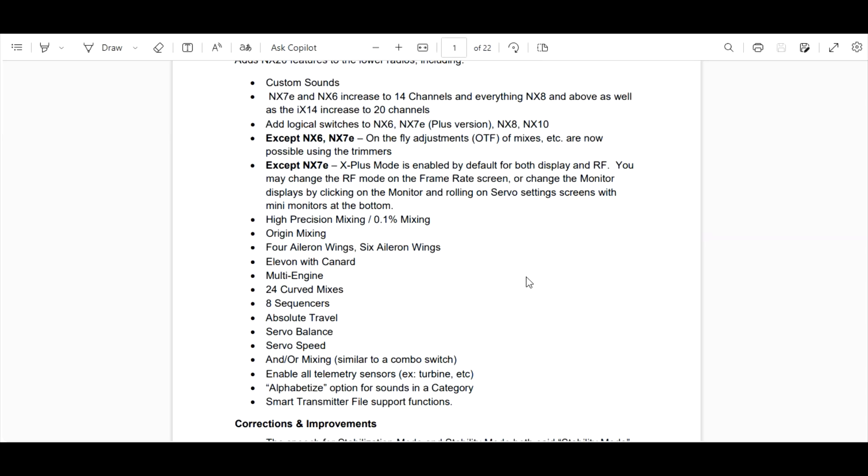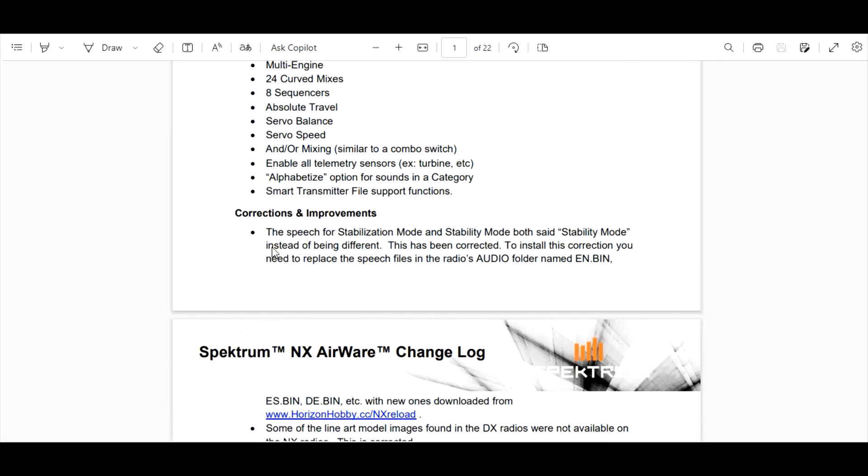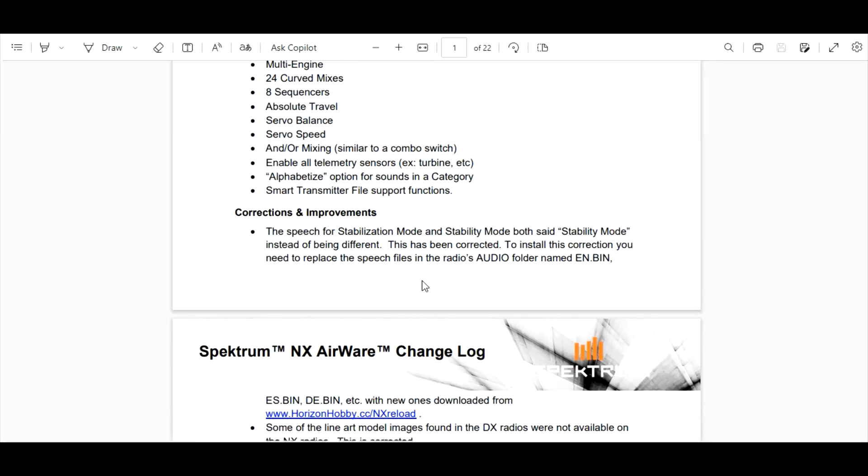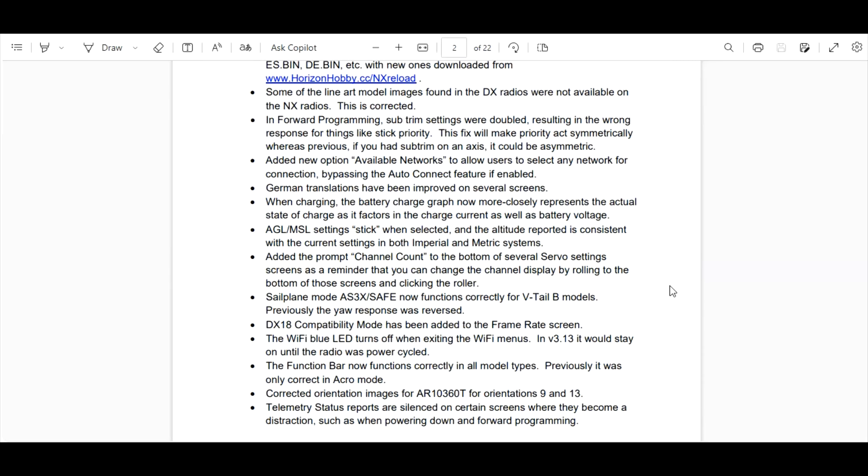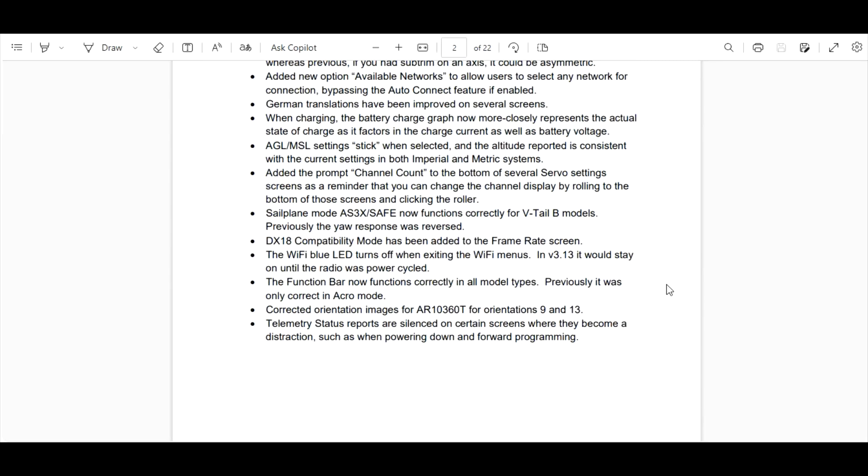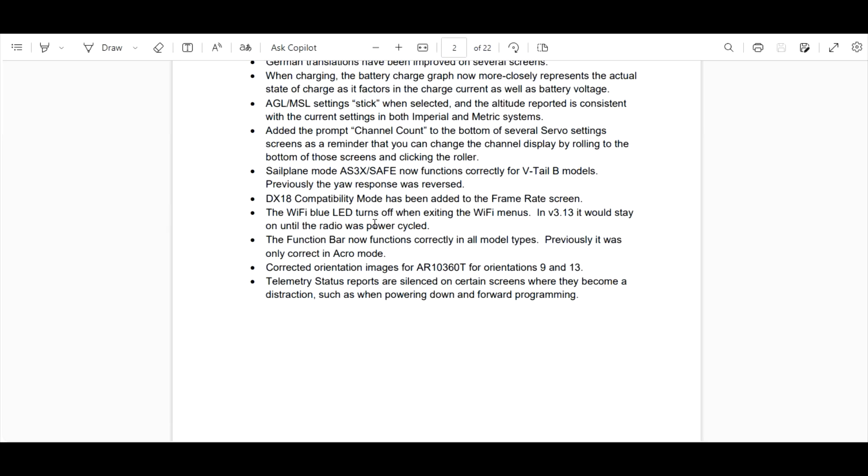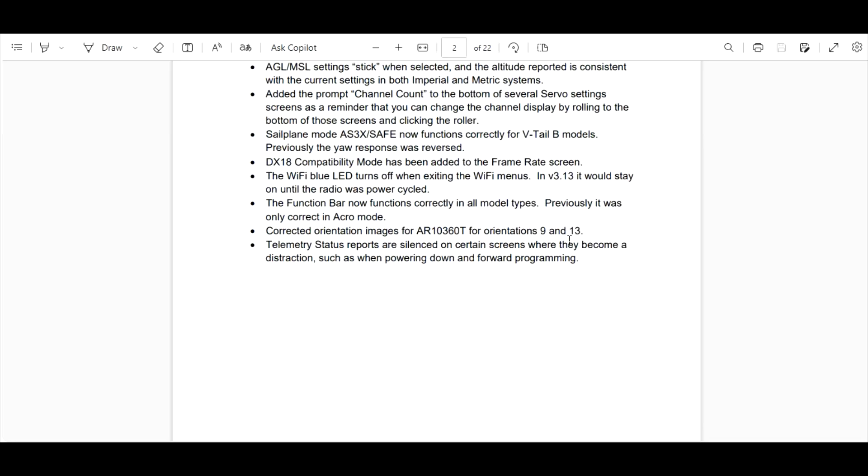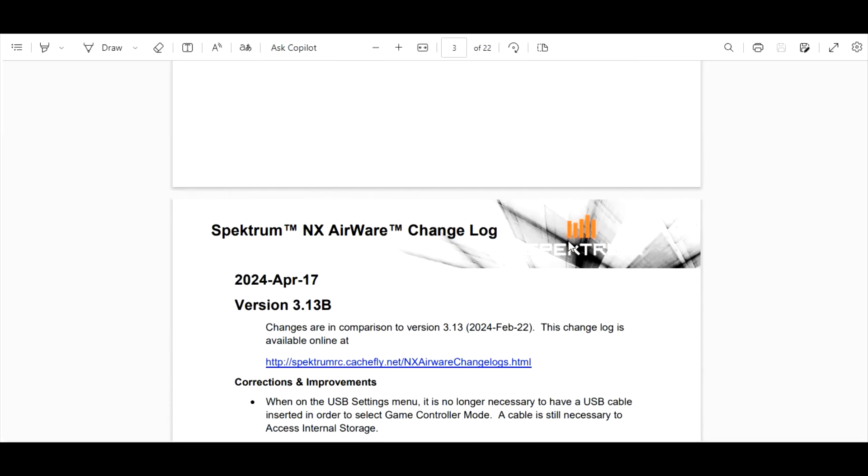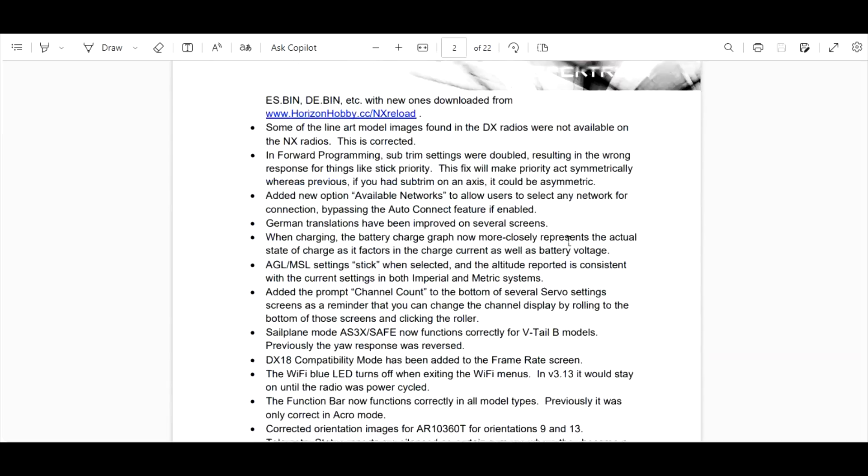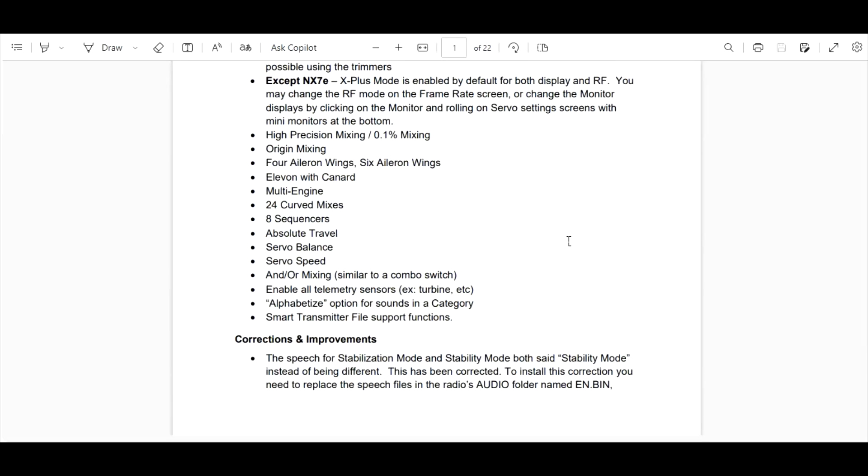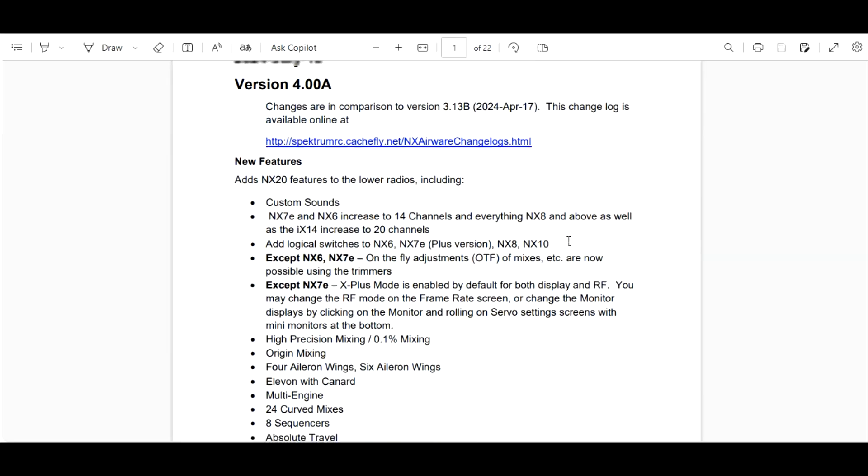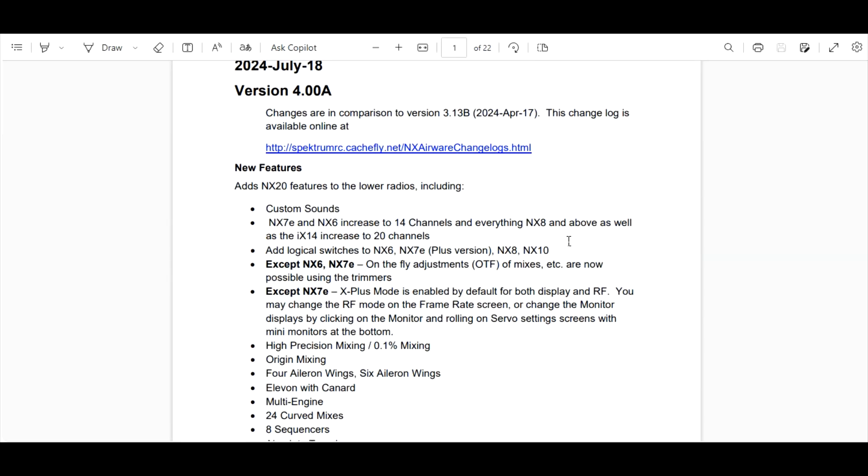So here's a list of stuff that it's going to have, and here is a list of corrections and improvements. You can pause it if you want. Here's some corrections. Right here DX18 compatibility mode has been added to frame rate screen, so updates are working for the 18 as well. This is the 3.13. Anyways, here's the list of the changes and fixes that this 4.00a is going to do.